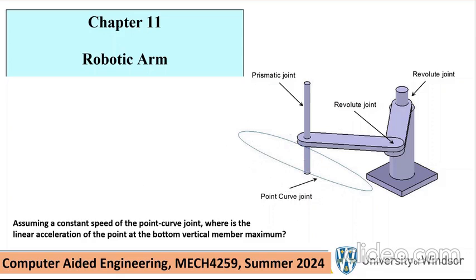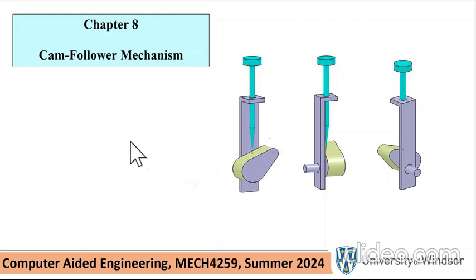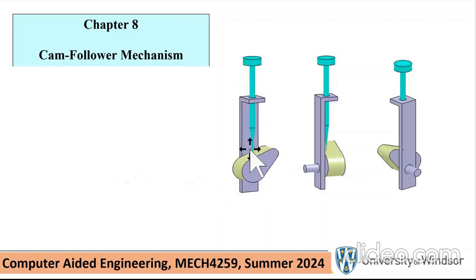The last problem is a cam follower. I'll be using a point-surface joint. Although I've drawn this as a surface, it can also be done without having a surface — I'll show you how. As the cam turns, it pushes the pin up and down. This is essentially how valves work in an internal combustion engine — the fuel valve. So let's get down to business.